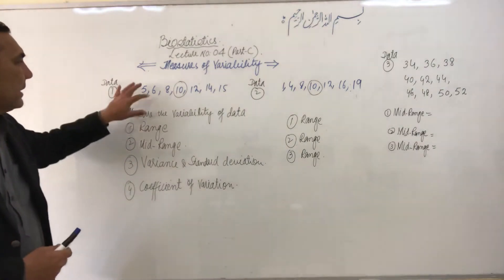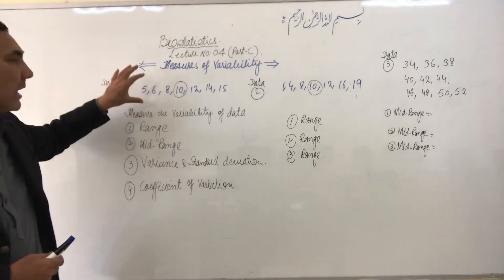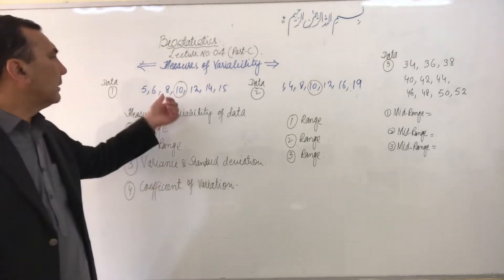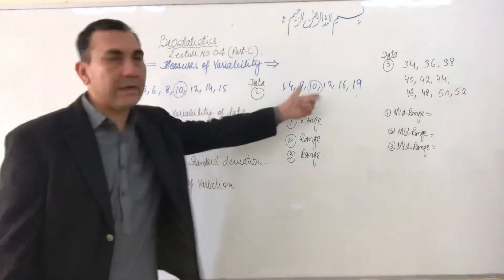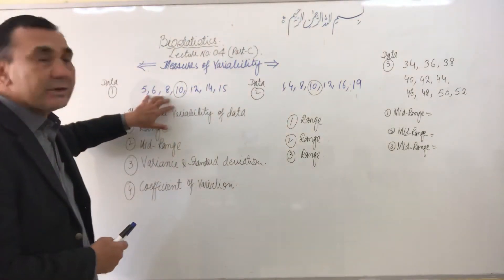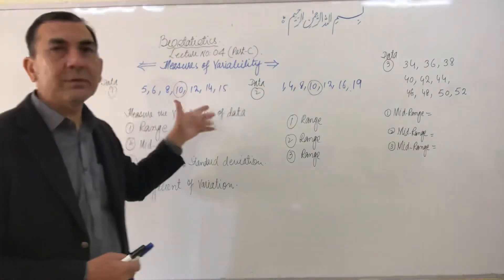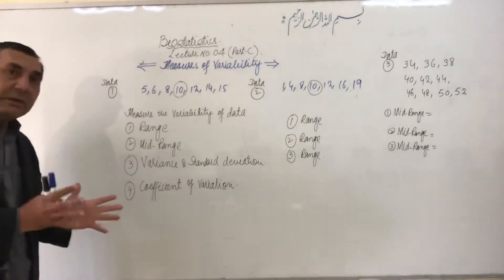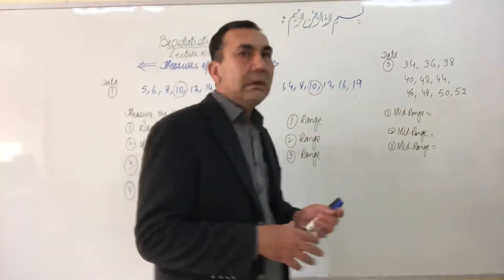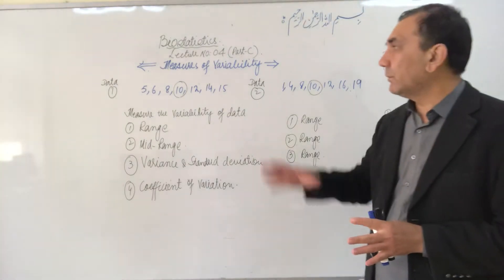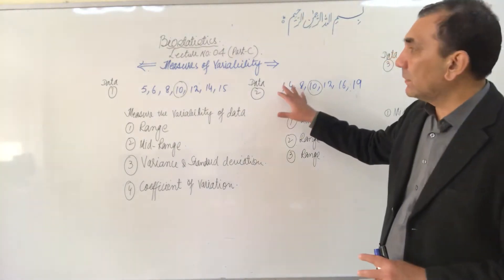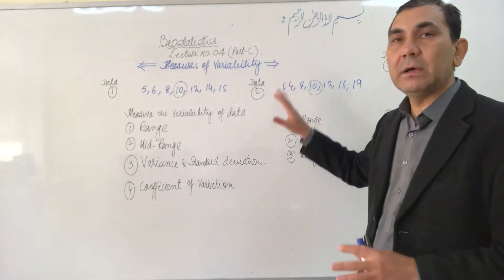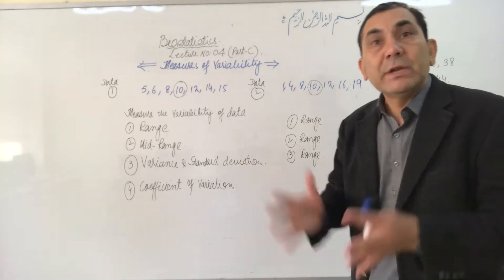Here I have put two data sets. When I measure the mean of both data sets, after calculation the mean of both data set one and data set two comes up as 10. The mean is the same for both. But if you look at both data sets, a huge variation or variability is present between the two data sets.